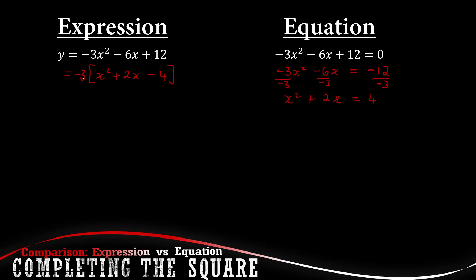With an expression you can't get rid of this 3, you just factorize it out and it has to stay there. But with an equation, you're allowed to divide, what you do on the one side you can do on the other side, so you're allowed to divide every term with it and it can completely disappear.